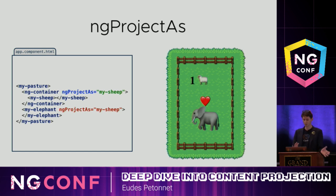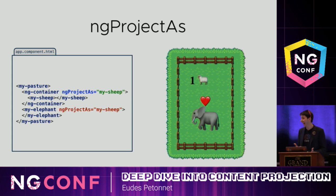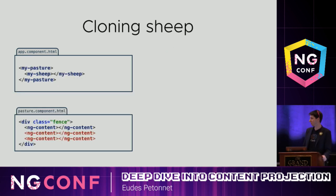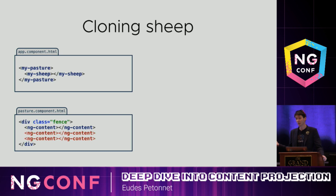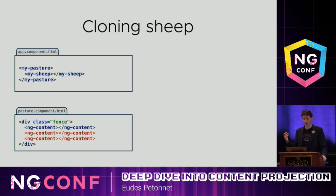We've seen targeted projection and the more basic cases. Now we're going to try hacking Angular — let's see if we can trick it into doing something unexpected. The first thing we can try is cloning the sheep. You have a pasture with a single sheep in it, and what if the pasture's template has three ng-contents? Do you get three sheep counting one, two, three?